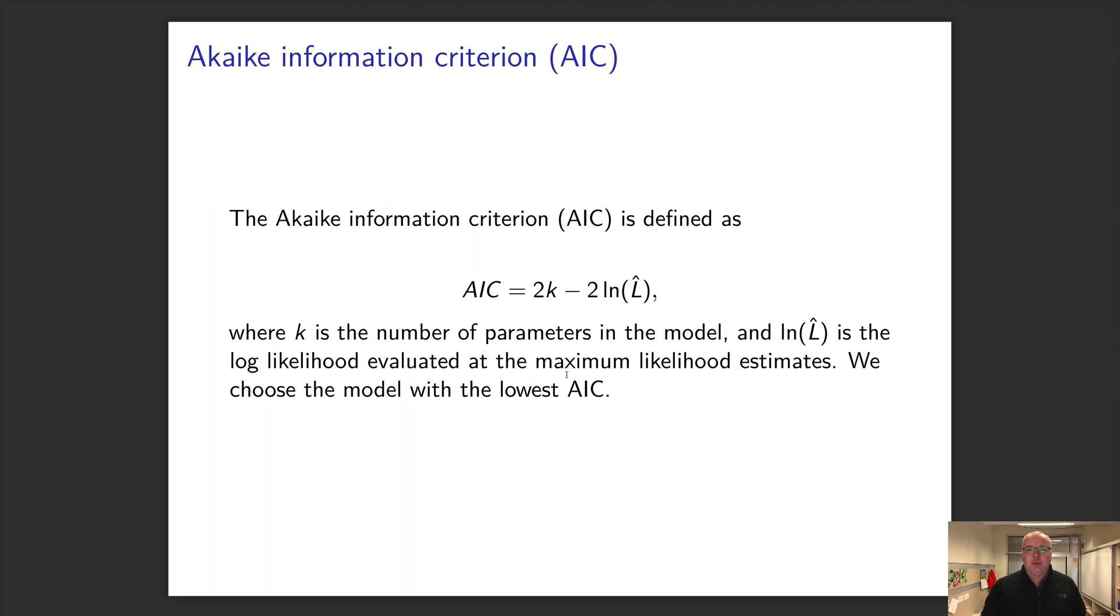So we want to have a measure of goodness of fit, but we want to penalize it. We want to take into account that we'd prefer simpler models, or what we call parsimonious models. We want models that are as complicated as they need to be, but not too complicated. And the Akaike Information Criterion gives you that.